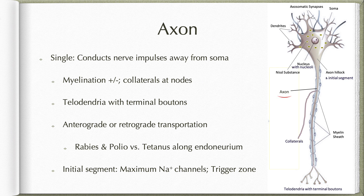Axons are single elongated processes which conduct the nerve impulse away from the soma. They may be myelinated, and collateral branches arise between two adjacent segments of myelin called nodes of Ranvier. The axon ends by branching called telodendria, which show terminal buttons marking the site of synapses.